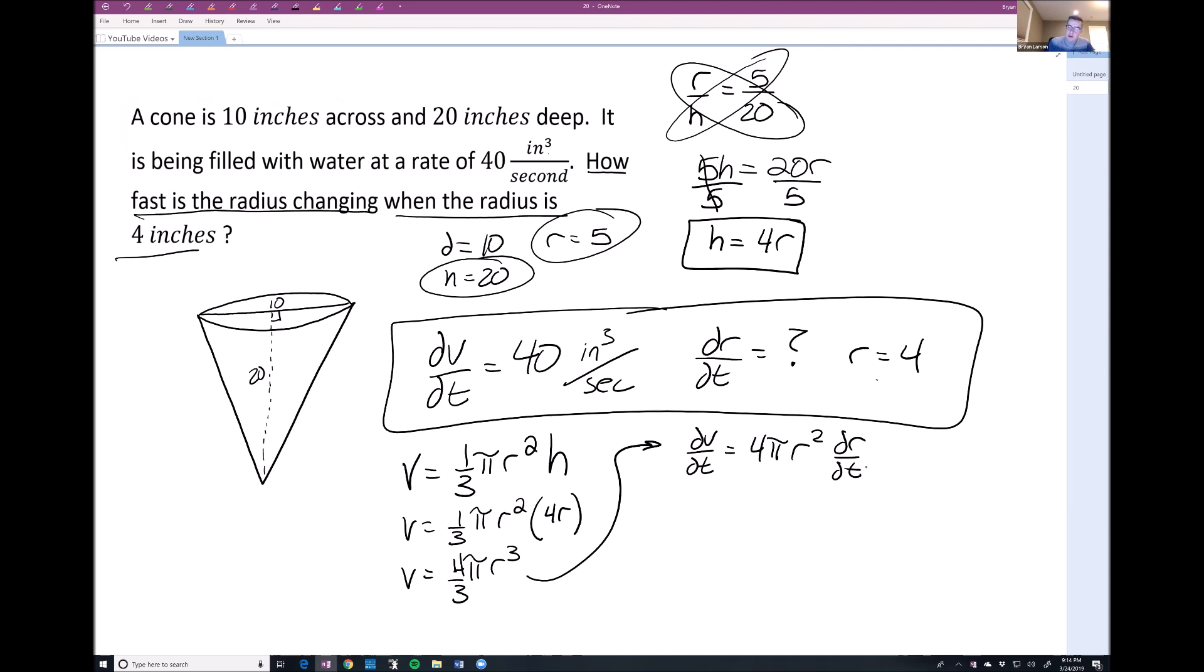And now we're going to fill in what we know. Well, dV/dt we said was 40. This would be 4 pi. And now we care about when the radius was 4. So I'm going to fill in 4 squared. And then dr/dt is what we're trying to solve for. So let's go ahead and try to solve for dr/dt.